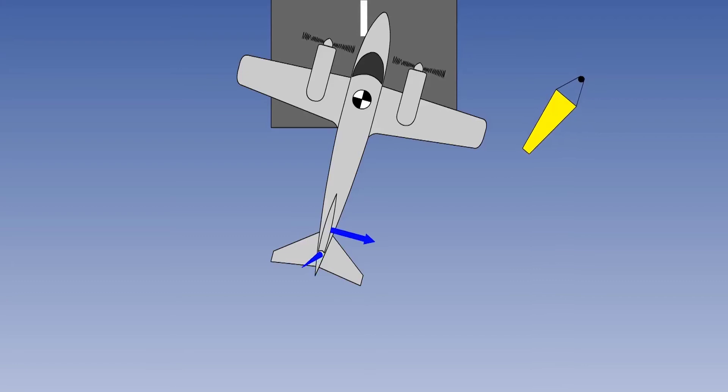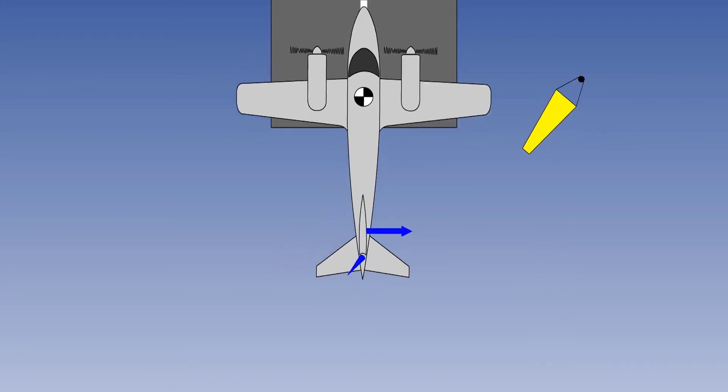You use the rudder to align the aircraft with its direction of travel. Not too early or the aircraft will start to drift sideways. Not too late, otherwise you will damage the undercarriage.